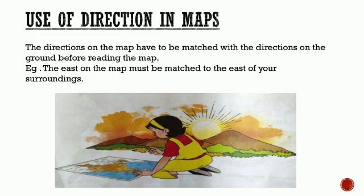Use of Direction in a Map. In a map, directions are always shown. They are indicated with the help of an arrow pointing North. The directions on the map have to be matched with the directions on the ground before reading the map. For example, the East on the map must be matched to the East of your surroundings.